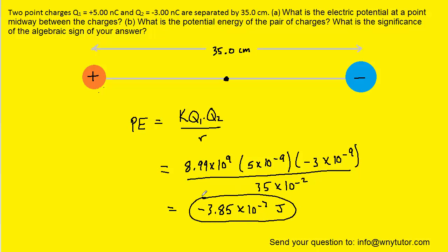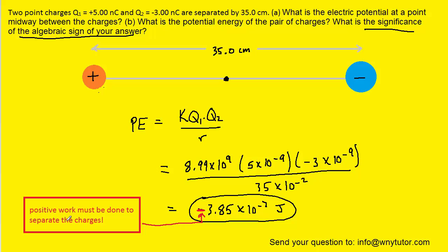Finally, the question asks, what is the significance of the algebraic sign of your answer? Notice the algebraic sign of our answer was a negative sign. And the fact that it's negative means that positive work must be done in order to separate the charges. That should make sense because we have a positive charge situated near a negative charge.